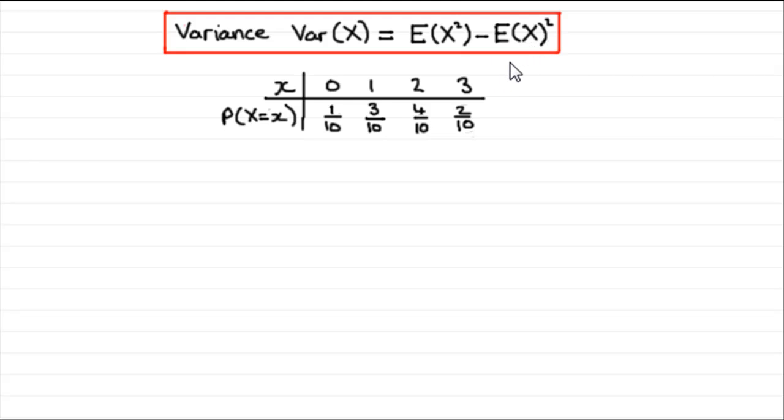In earlier tutorials, I showed you how to work out E(x), the expected mean, and E(x²). So if we calculate those, we can put them in this formula and it gives us the variance of our random variable.